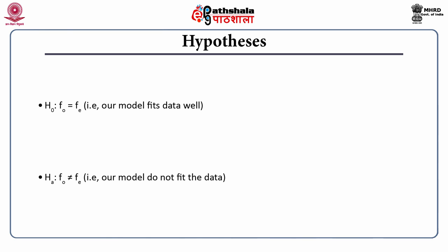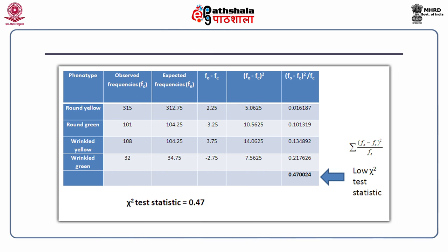You can plug into the same chi-square equation. The columns are: FO, FE, FO minus FE, (FO minus FE) squared, and (FO minus FE) squared divided by FE. You sum all values in the last column to get the final chi-square test statistic, which is 0.470024 — a very low chi-square. As mentioned earlier, a low chi-square corresponds to a high p-value, so you expect the p-value to be very high in this case.